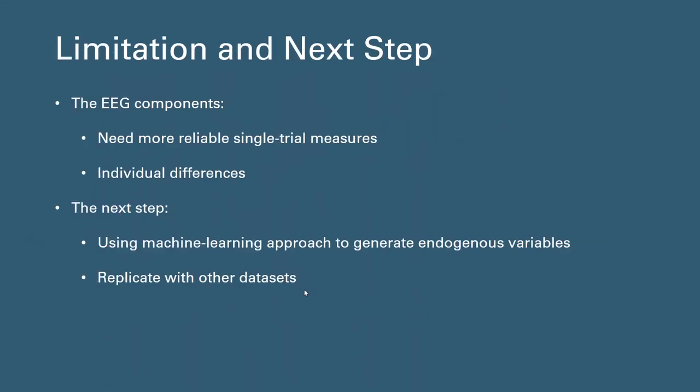However, there are still some limitations based on current progress. First, the calculation of EEG measures sometimes do not apply to individuals, as each person has slightly different activation patterns and EEG signals are inherently noisy. Therefore, we need better and more reliable single trial measures. The next step for this ongoing study is to use a machine learning approach to generate endogenous variables which maximize differences in the variable between conditions. Second, we are also looking for replicating our findings in other datasets with different experimental setups.